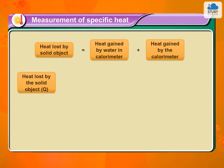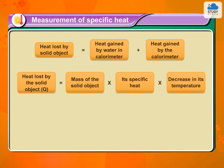Here, heat lost by the solid object Q is equal to mass of the solid object into its specific heat into decrease in its temperature.